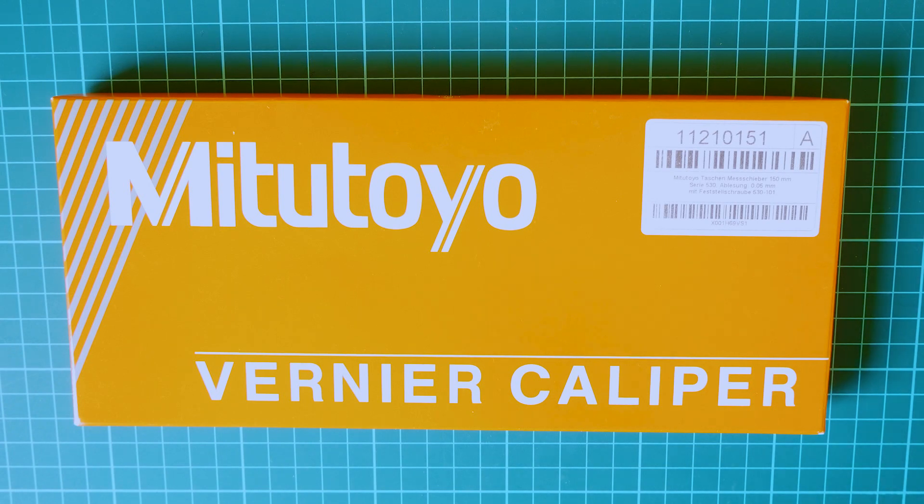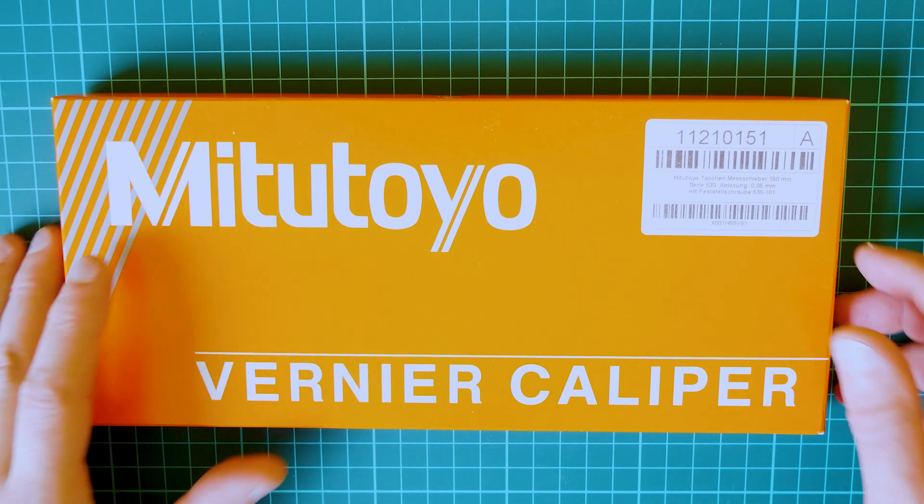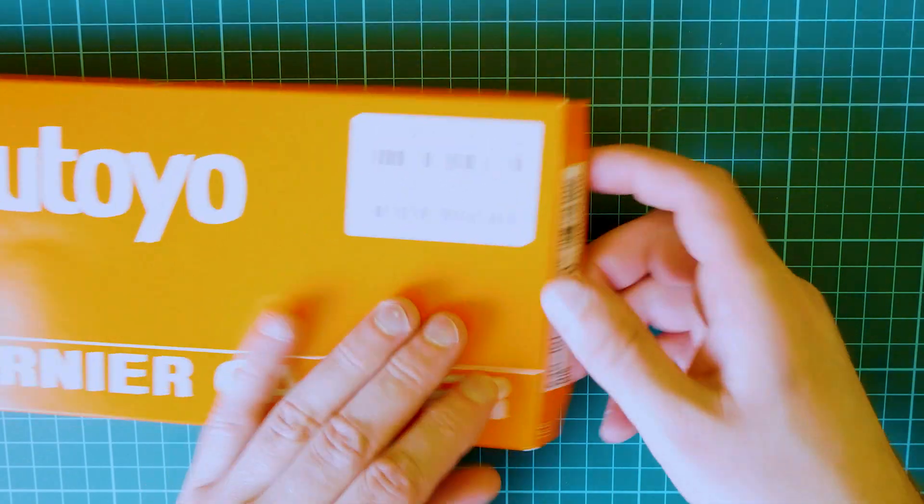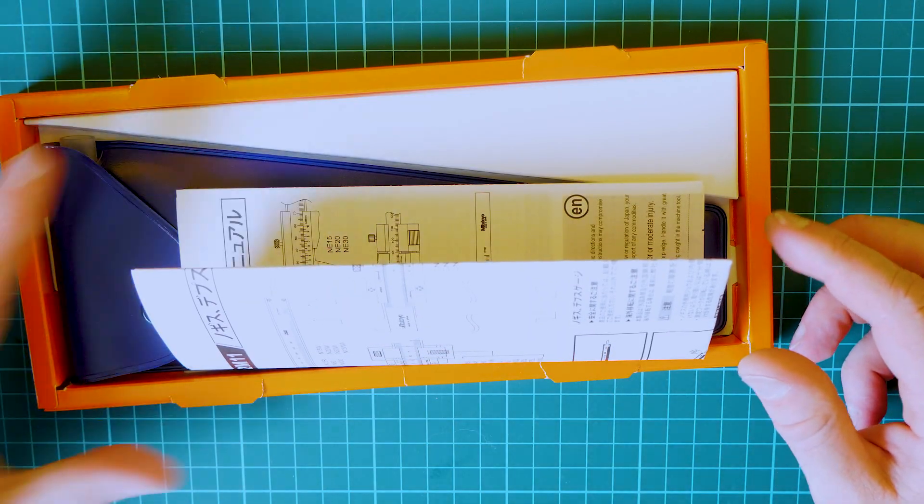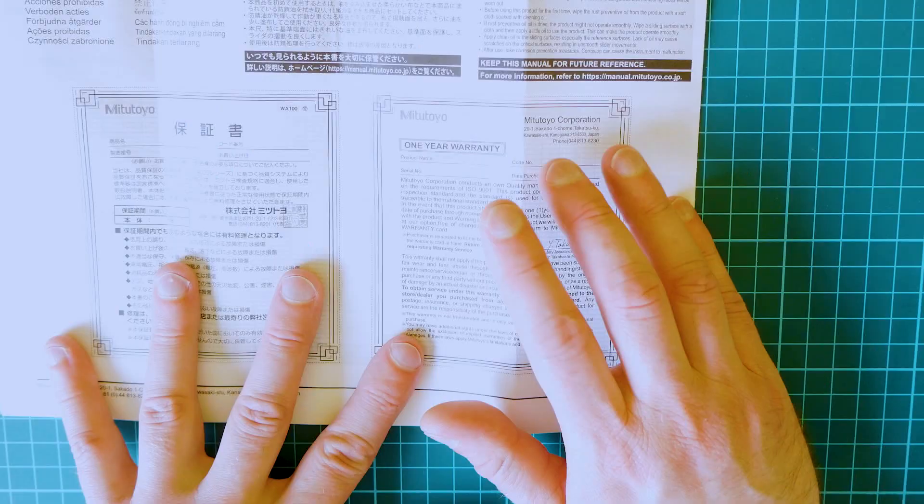This is a short review of Mitutoyo Vernier calipers. I don't know if you can see, but they're made in Japan. The first thing I don't like is the one-year warranty.